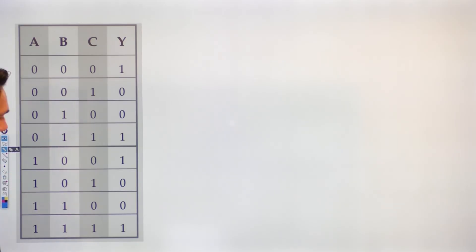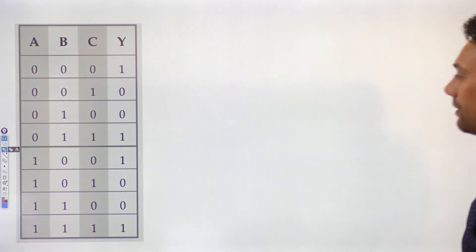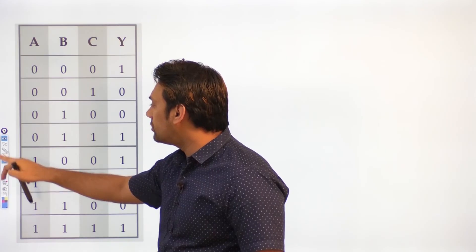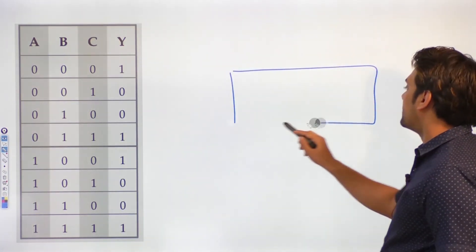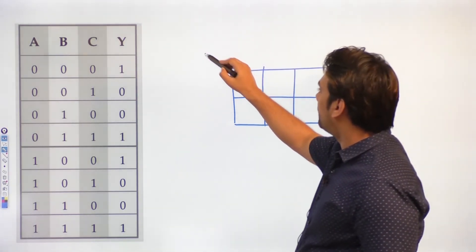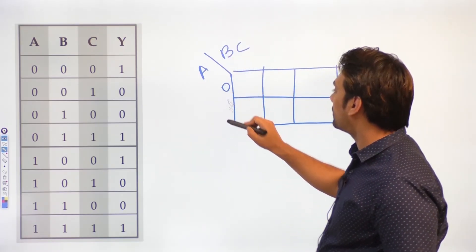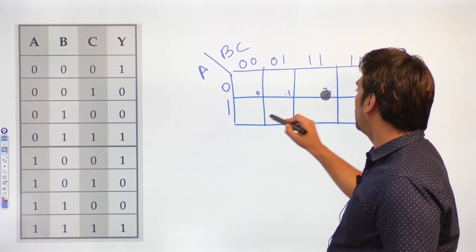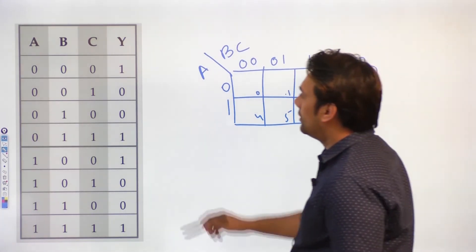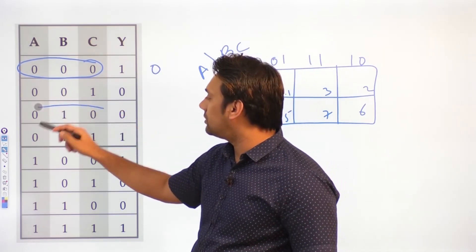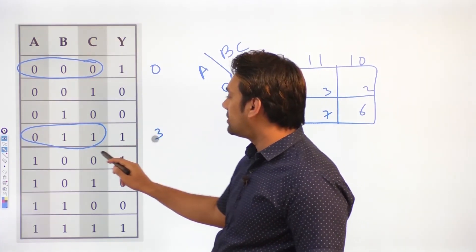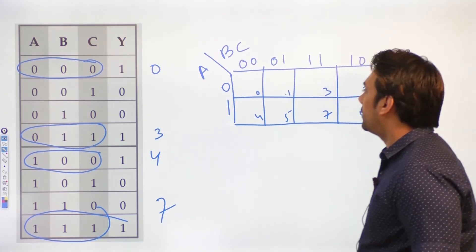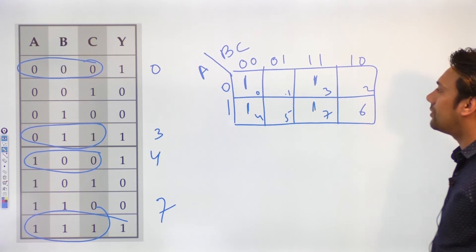Now again, this time I will take a function instead of an expression and try to represent and minimize it using the KMap. This is a three variable function, so I need a KMap with eight cells. Here we have A on one axis and BC on the other — with columns 00, 01, 11, 10. The locations are 0 through 7. The function is 1 at the decimal locations: 0, 3, 4, and 7. In these locations we have ones.